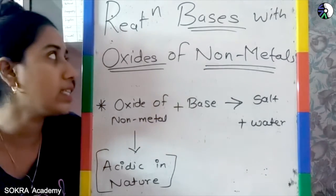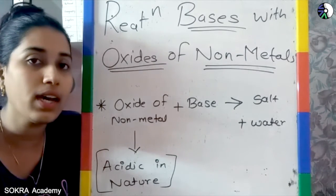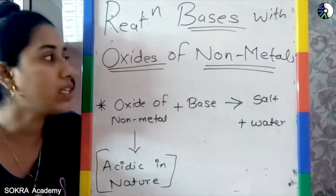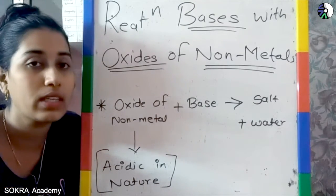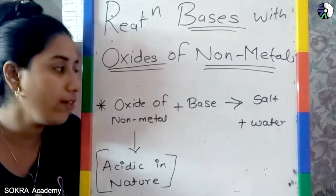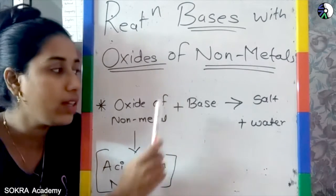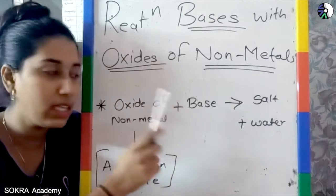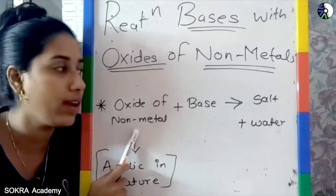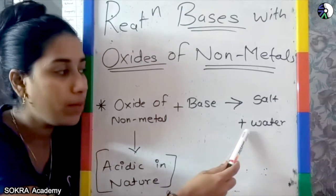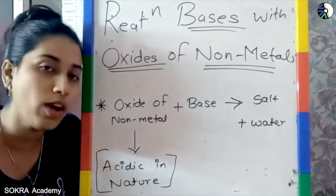So we have obtained, we have seen the acid ke saath metal oxides, metal ya phir oxide uske react karte hai, toh kya form hota hai, wo hum logo ne dekha. So now we are moving toward the next, that is nothing but your reaction of bases. Jab koi base react karta hai non-metal oxide ke saath mein, wo bhi kaisa hota hai? Oxide of non-metal ke saath, jab koi reaction hota hai, kis ka base ke saath, toh kya form hota hai, wo hum logo dekh lete hai.